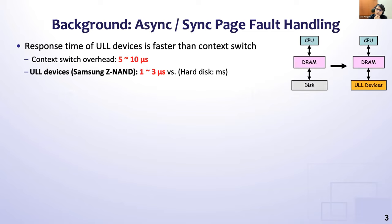The advance of non-volatile memory technology has introduced ultra-low latency storage devices and significantly narrowed the performance gap between memory and storage. The latency of a ULL device is about 3 microseconds, and the overhead of running context switching while handling page faults asynchronously is about 5 to 10 microseconds. Due to this, the context switching time is now considered too long, triggering reconsideration of handling asynchronous page faults.